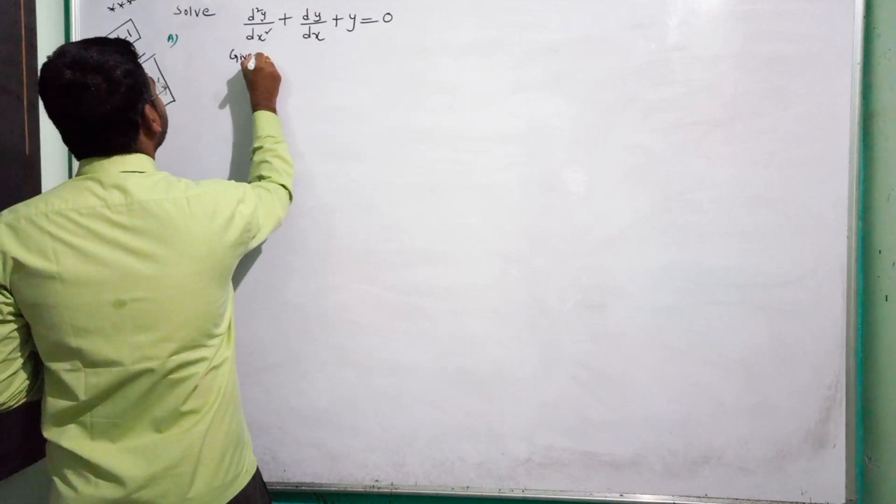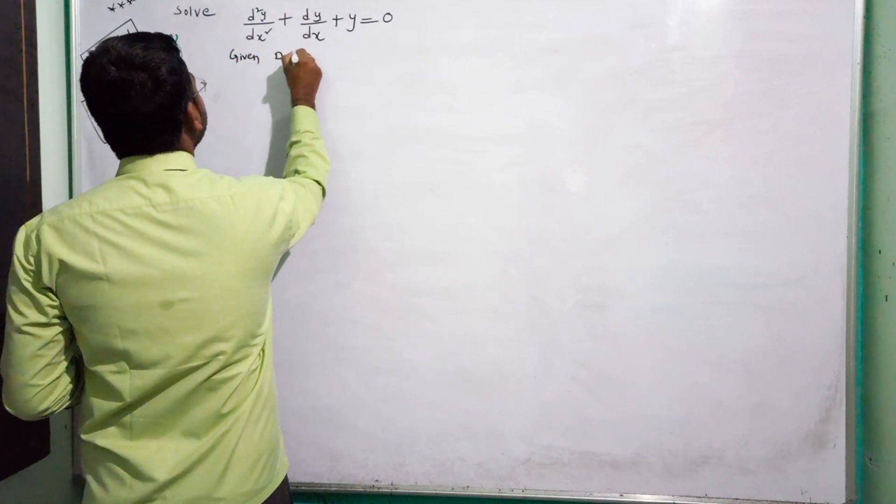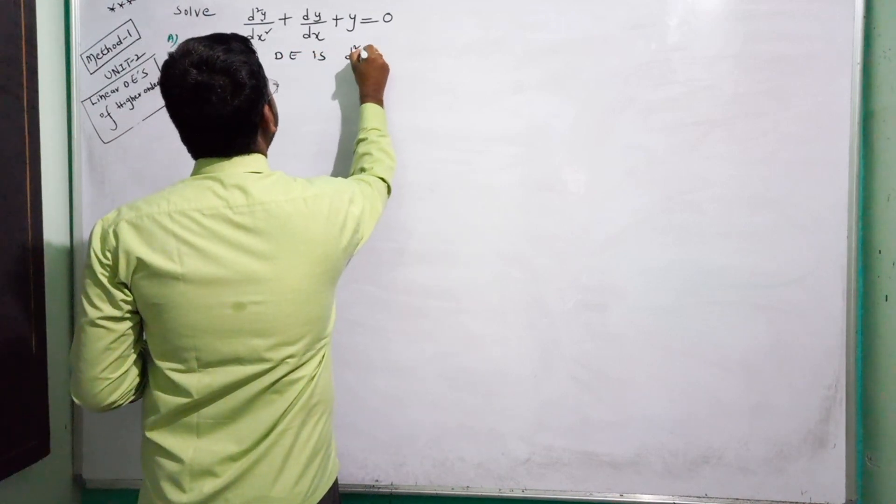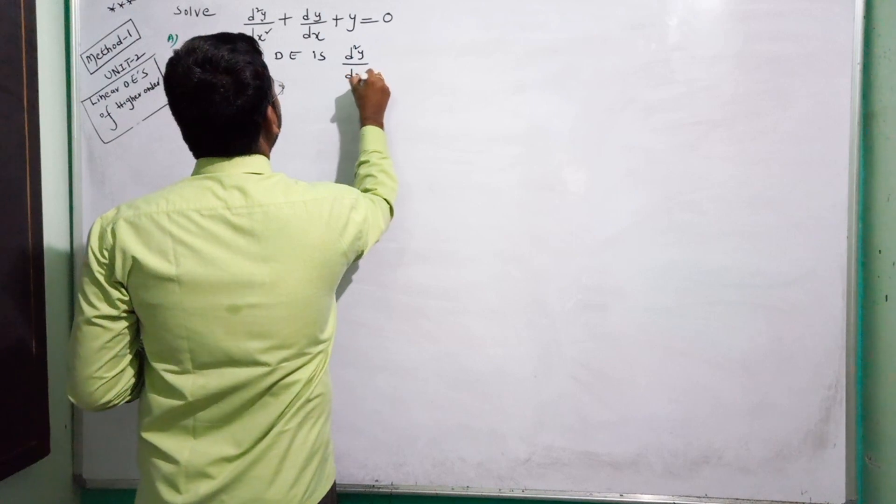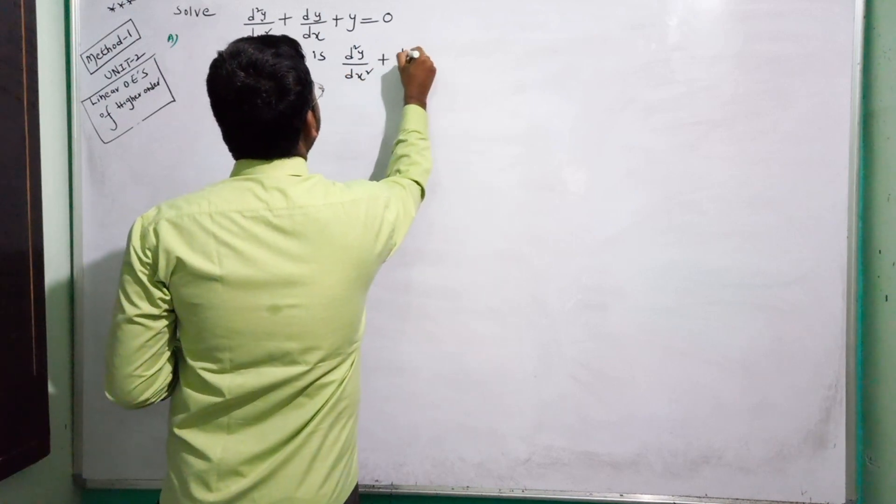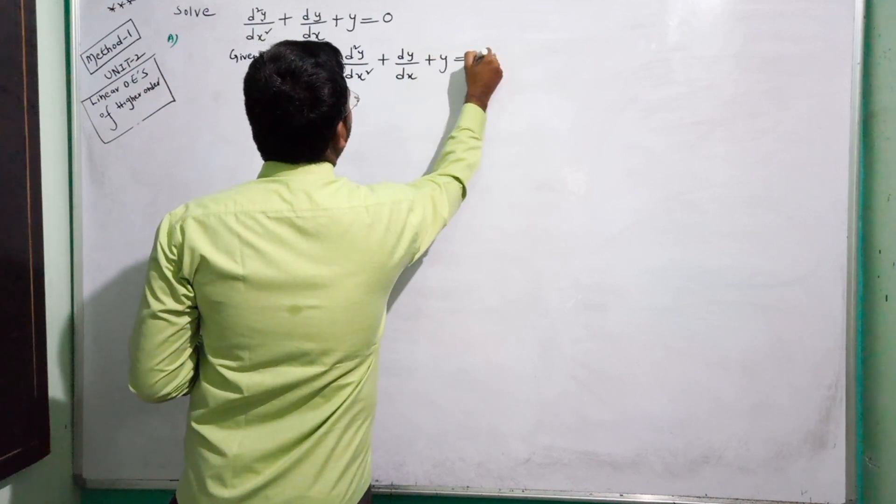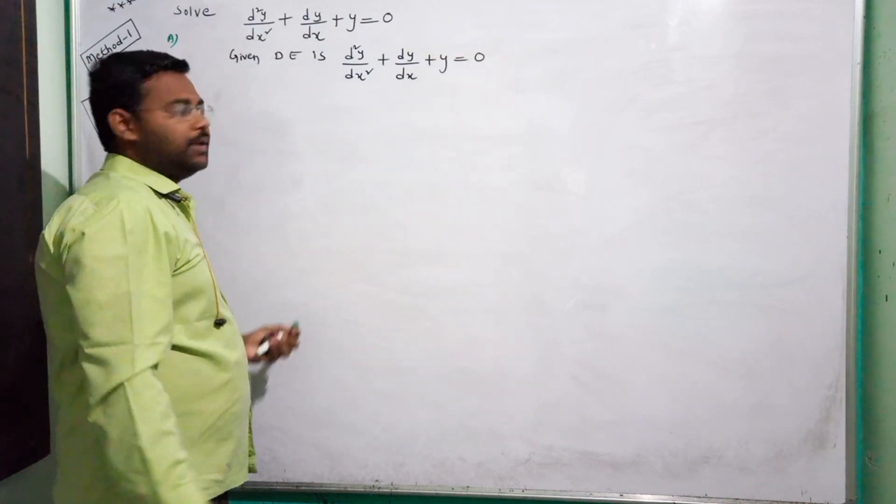First, we have the equation. Given differential equation is: d squared y by dx squared plus dy by dx plus y equals zero.